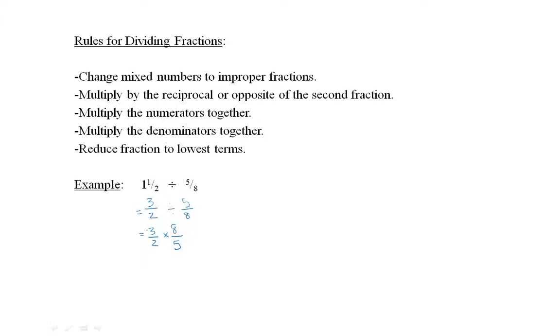The next step is to multiply the numerators together, and then multiply the denominators together. 3 times 8 is 24. 2 times 5 is 10.